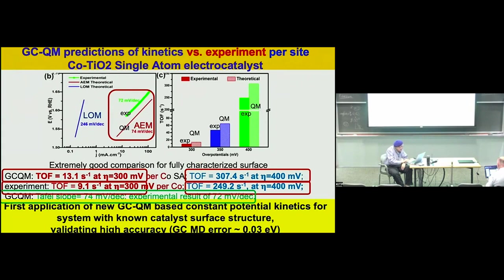The experiments were done at almost the same time as the theory. As a function of potential, the quantum mechanics results are about 25% faster than experiment, but it tracks with the potential. This means our barriers are about 0.03 eV too low. Generally, quantum mechanics is not expected to be better than about 0.1 or maybe 0.05 eV, but in this case we may be getting as close as 0.03 eV.